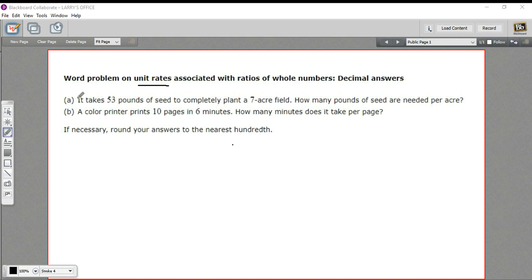In this first part, it says it takes 53 pounds of seed to completely plant a seven acre field. How many pounds of seed are needed per acre? The clue here is the per. Per means divide.